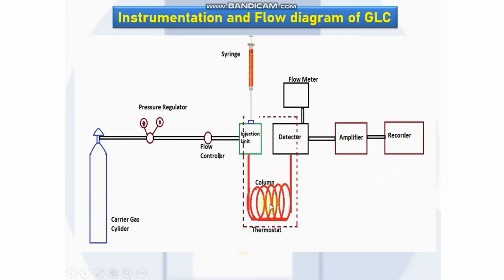The column is maintained at a constant temperature higher than the boiling point of the least volatile component in the sample mixture, with the help of a thermostat. The sample injection port and the detector unit are usually maintained at still higher temperatures to promote rapid vaporization of the injected sample and to prevent condensation in the detector. As soon as each component emerges from the column, the detector response is sent to a recorder.